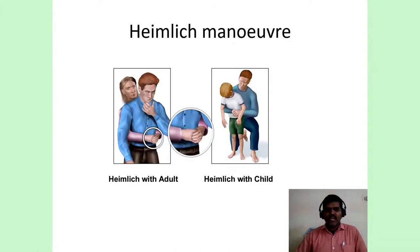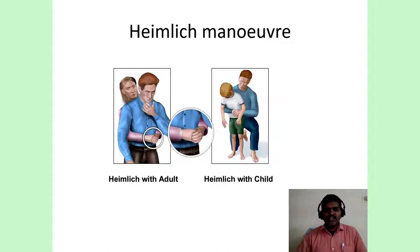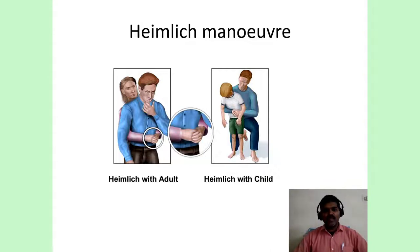This is the picture of the Heimlich maneuver. To perform it: go behind the patient, slightly bend the patient forward so the head is slightly downwards. Make a fist with your dominant hand and hold it in the epigastric region just below the sternal bone. With the other hand, circle the patient and hold your fist, then suddenly deliver a forcible blow backwards and upwards. Keep repeating until the foreign body is expelled. The patient will be able to breathe normally and talk once it is expelled.